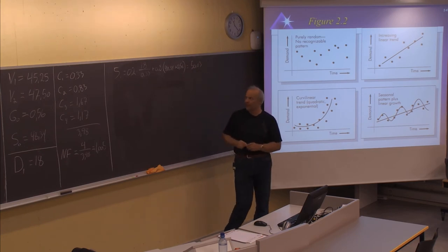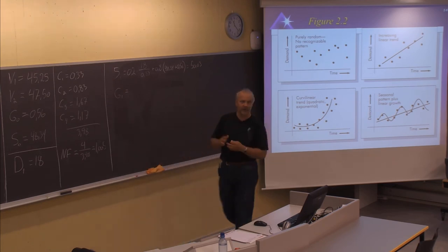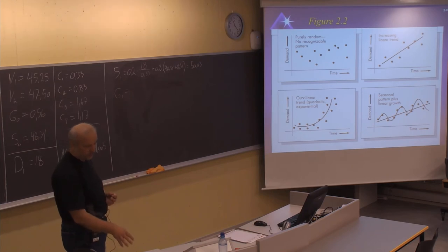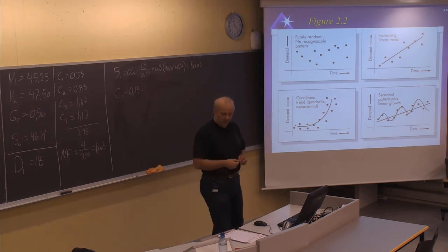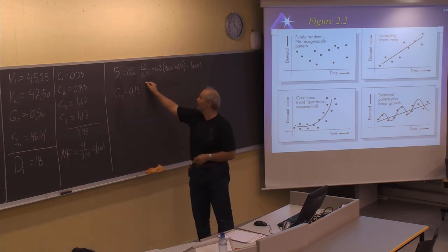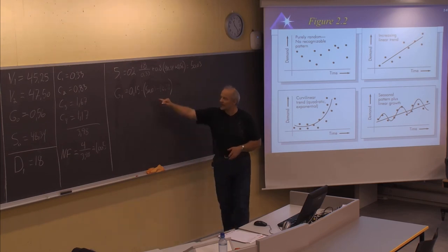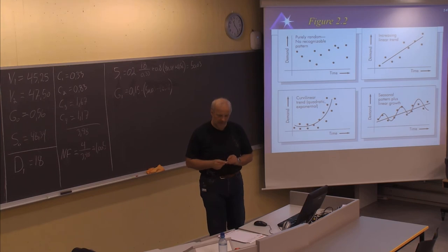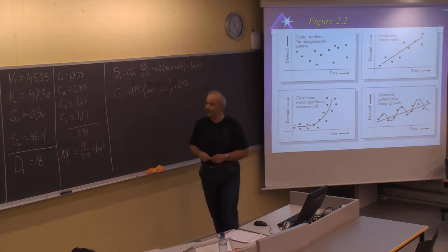50.03 will be the new value of the series to be used in forecasting. The new value of the gradient, G1, also uses a smoothing constant, but this smoothing constant beta is given with another value — the smoothing constants don't need to have the same value. Beta is 0.15, multiplied by the difference of the current and previous series values: 50.03 minus 48.34. Then we adjust by multiplying 1 minus beta, which is 0.85, by the previous gradient value of 0.56.